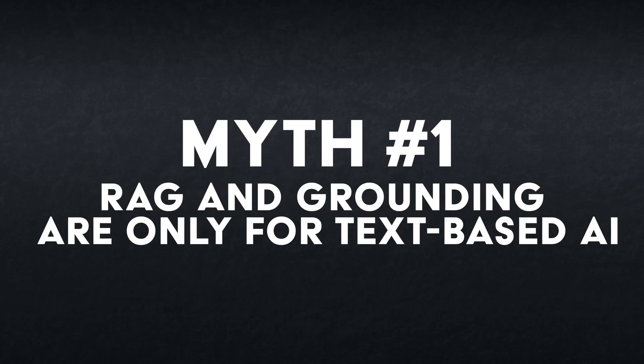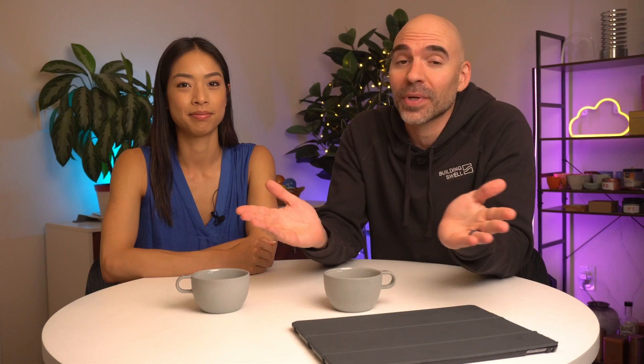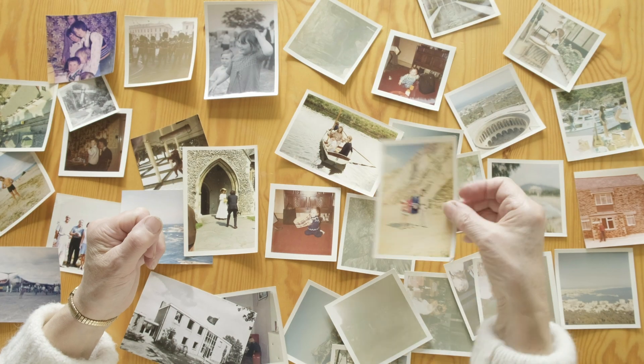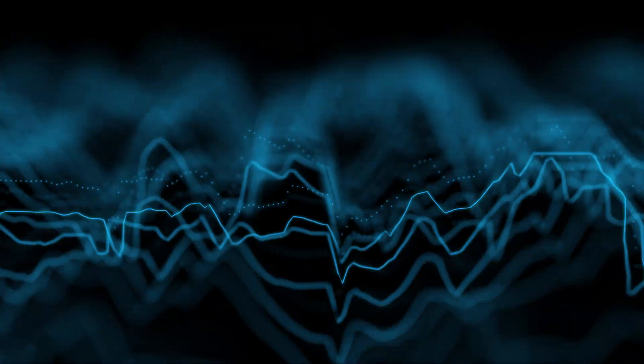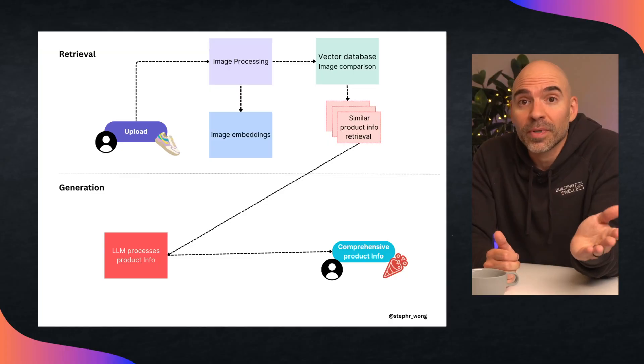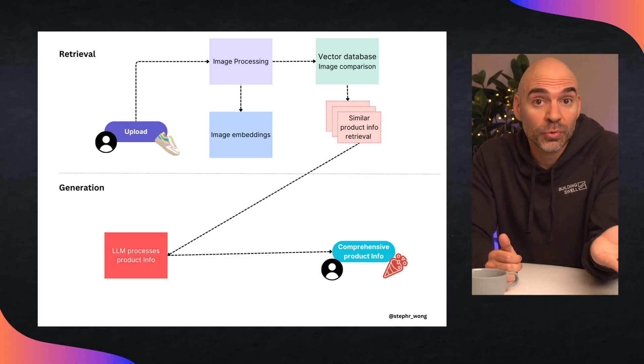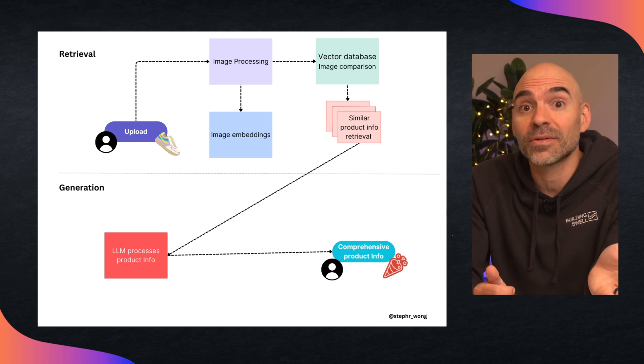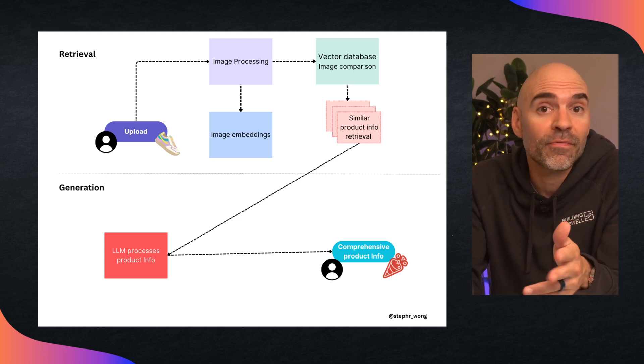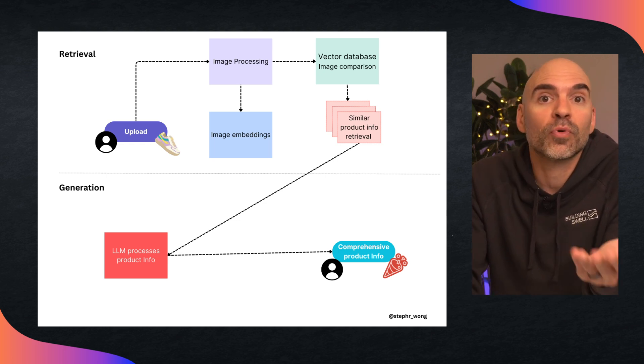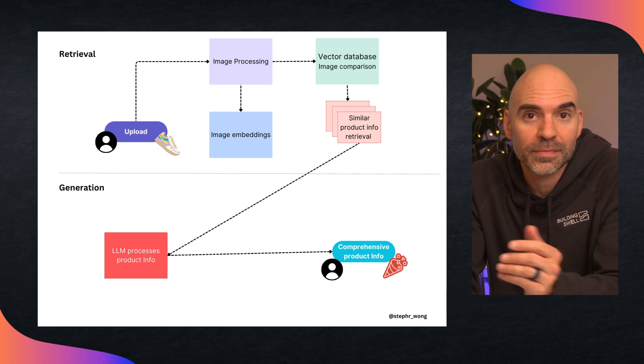Myth number one: RAG and grounding are only for text-based AI. In reality, these techniques are being applied to multimodal AI systems, including those working with images, audio, or even code. For example, imagine a product information retrieval system where you can search for products based on image queries — like finding similar shoes — and provide detailed product descriptions.